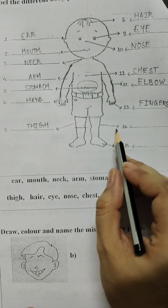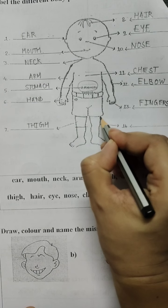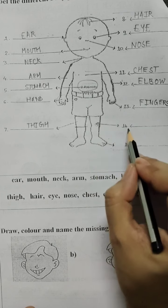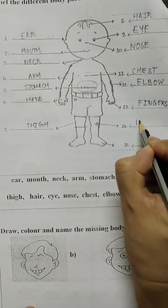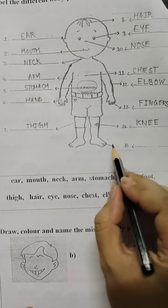And now after fingers, as you can see that this is the joint of the leg which helps us to fold our legs. So this is known as the knee. It helps us to bend.